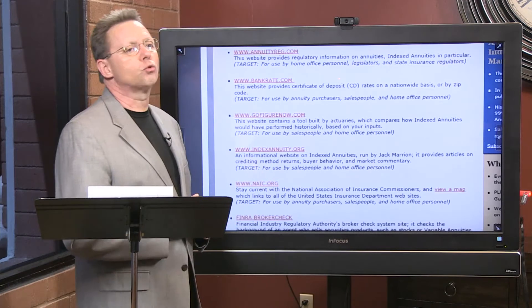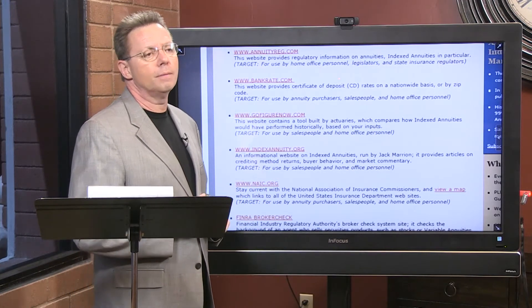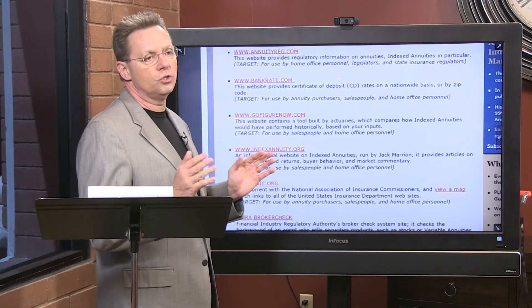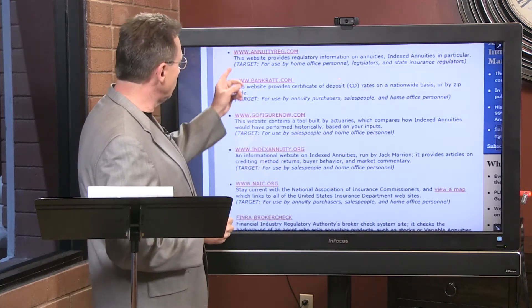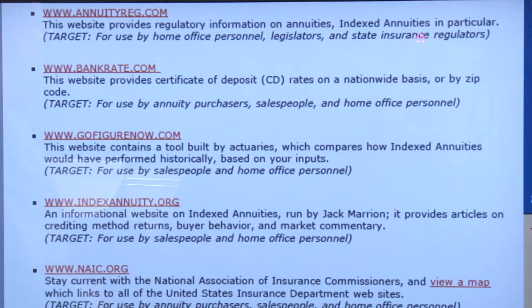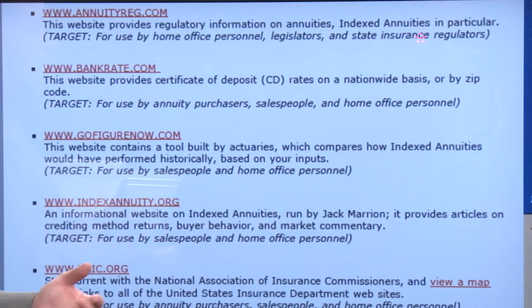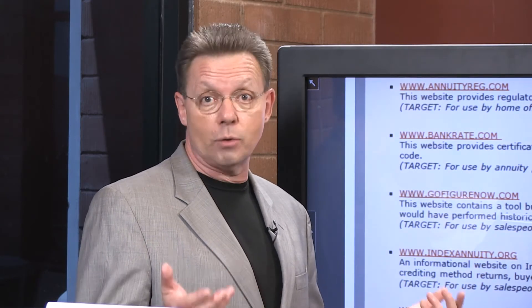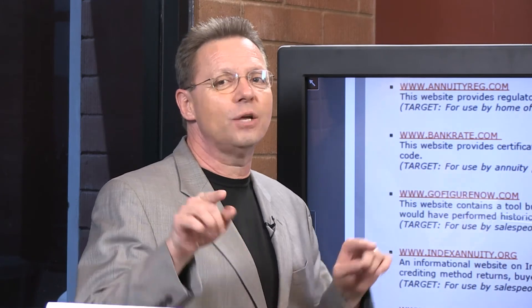Now here's a list of tremendous resources for annuities, pulled from annuityspecs.com — the software due diligence platform of Cheryl Moore, who I consider the number-one authority on indexing. The first one I like is www.annuityrate.com, which provides regulatory information on annuities and index annuities in particular. It's designed for home office personnel, legislators, and state insurance regulators — I check it to see if there's any regulatory action out there.